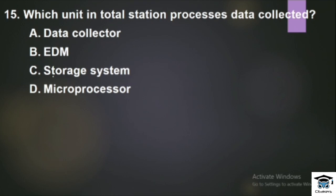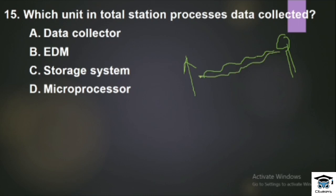Question: Which unit in the total station collects data? In the total station, the wave goes to the prism reflector, then it gets reflected back, and the instrument receives the wave. Then the data is processed and received.